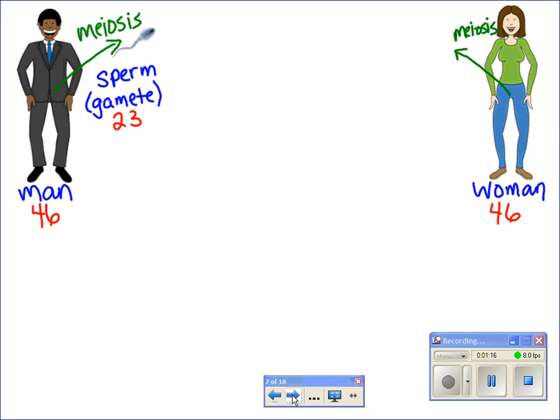The woman has also been going through meiosis. And in meiosis in a female, which occurs in the ovaries, an egg is produced, or an ovum. So that's the female gamete. And just like the sperm, the ovum has 23 chromosomes.